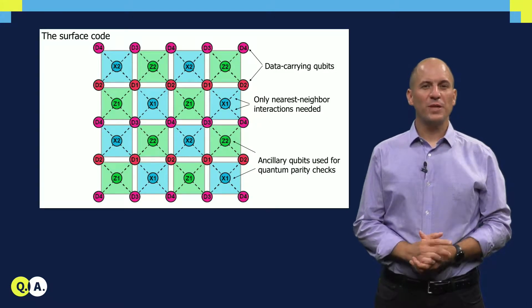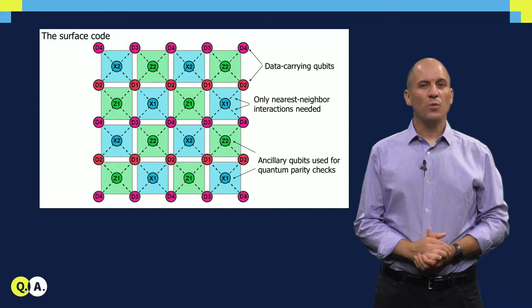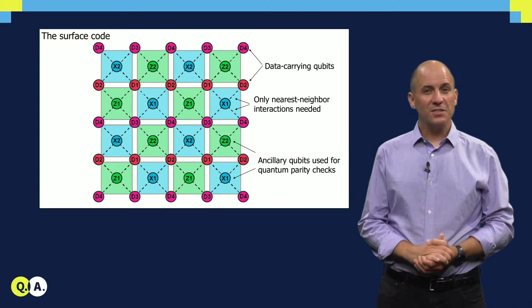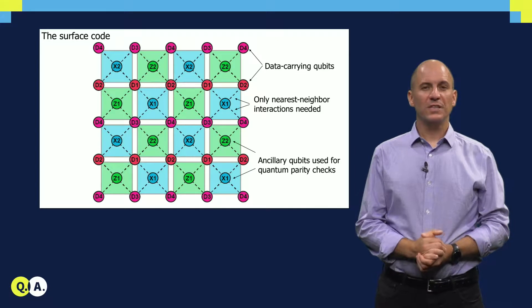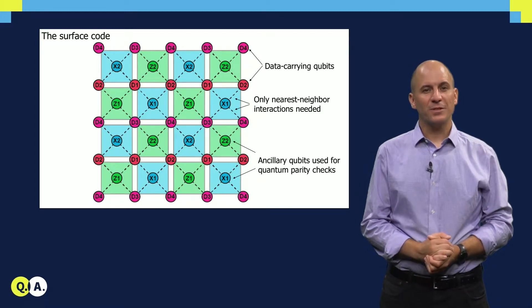Surface code calls for a two-dimensional square lattice of qubits with only nearest neighbor interactions. In addition, these qubits must be individually addressable both for single qubit gating and for measurement.